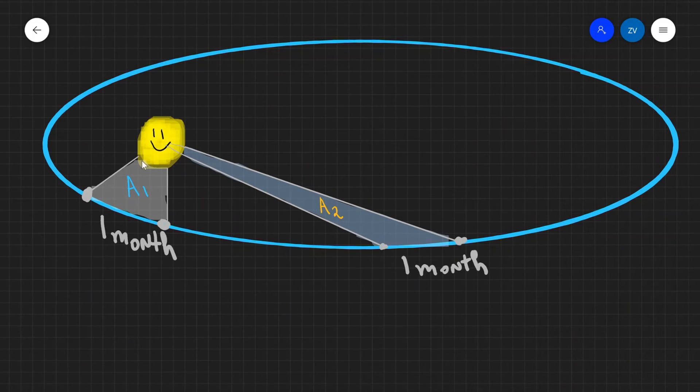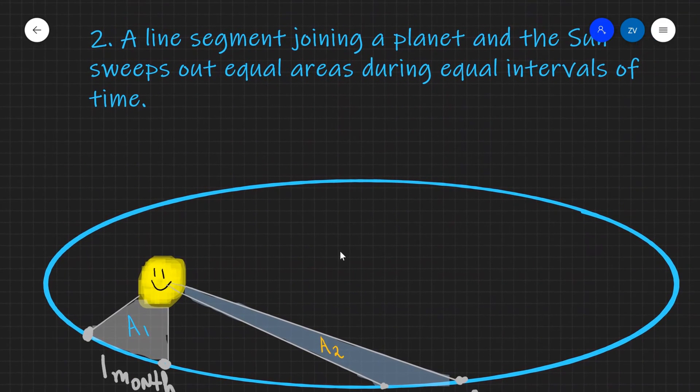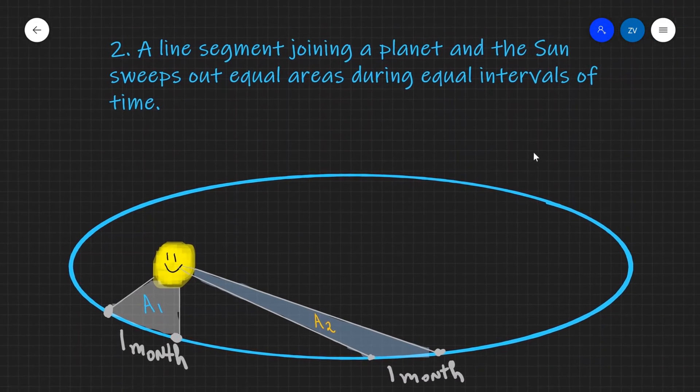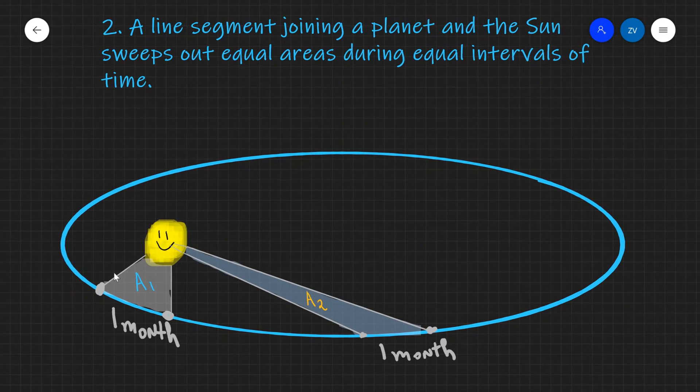Now Kepler's second law says that this area A1 is equal to the area A2. In other words, the wording of this law is that a line segment joining a planet and the sun sweeps out equal areas during equal intervals of time.